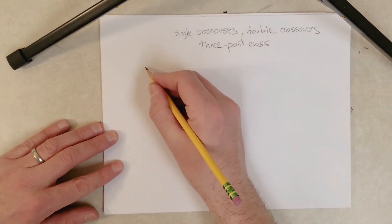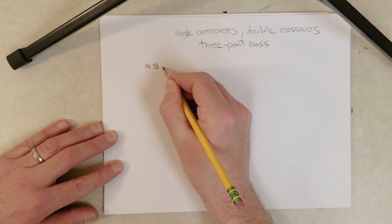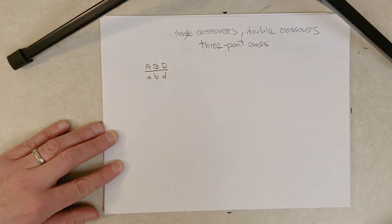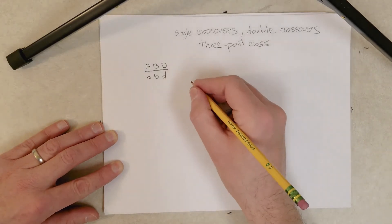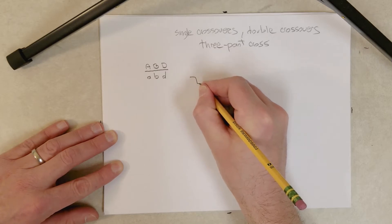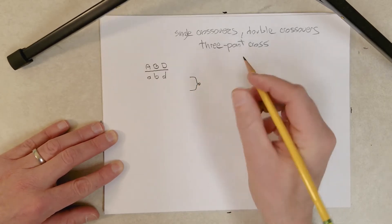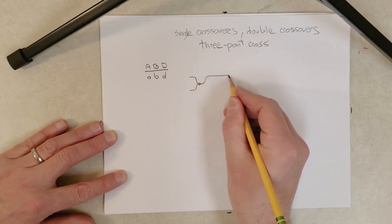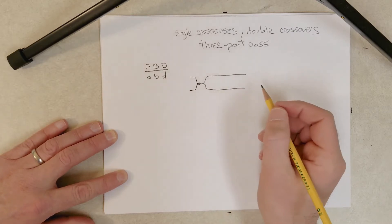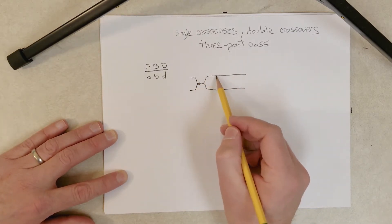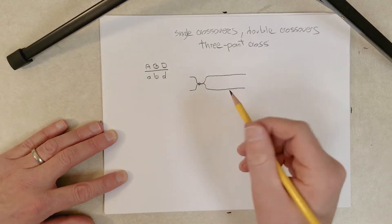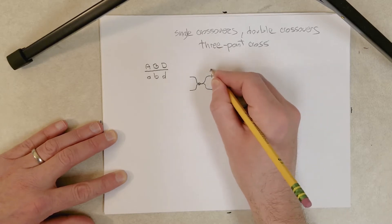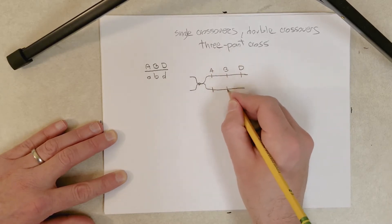Let's start with a genotype like this: big A, big B, big D linked on one chromosome, and the little a, little b, little d alleles linked on the other chromosome. Normally I diagram chromosomes going in a vertical direction, but for analyzing crossovers I like to diagram them on the side. Here's one chromosome of a tetrad — this would be the P arm and this would be the Q arm — of one chromatid, and then the other chromatid is there. Let me put our three genes, or alleles for three genes, in here.